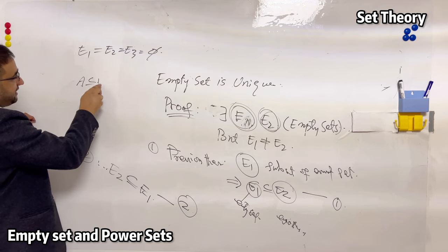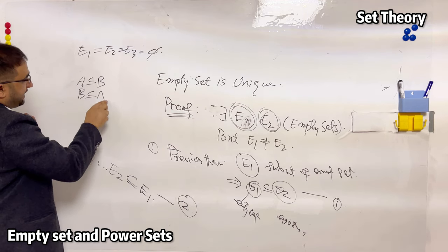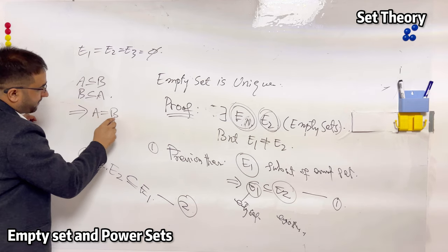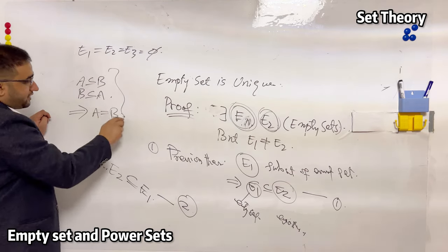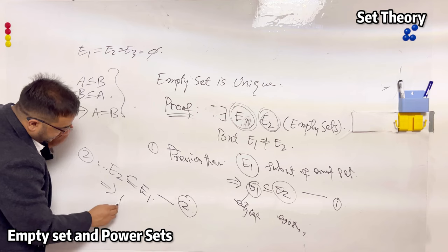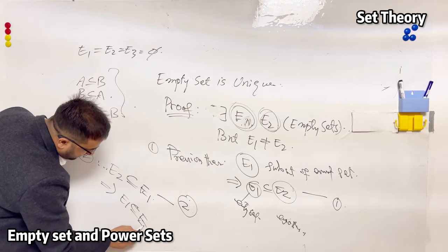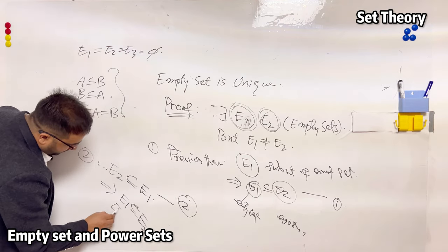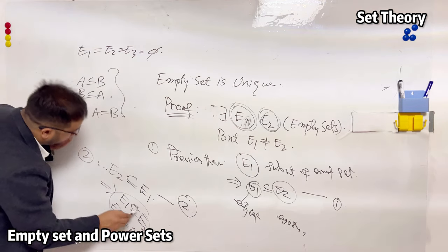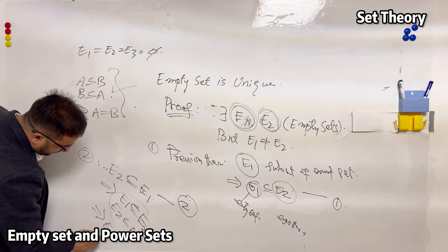From equations 1 and 2: E1 is a subset of E2 and E2 is a subset of E1. We know that if A is a subset of B and B is a subset of A, then A equals B. Using this concept, E1 and E2 are equal, which contradicts our assumption. Therefore the empty set is unique.